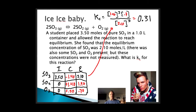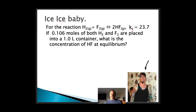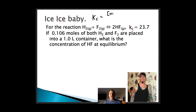ICE stands for Initial, Change, Equilibrium — ice ice baby. For the next reaction, H2 + F2 forms 2HF, we're given the Kc value. It's always good to start with the equilibrium expression: Kc = [HF]² / ([H2][F2]). The problem states 0.106 moles of both H2 and F2 are placed in a one-liter container — so initial concentration is 0.106 M each. What is the concentration of HF at equilibrium?